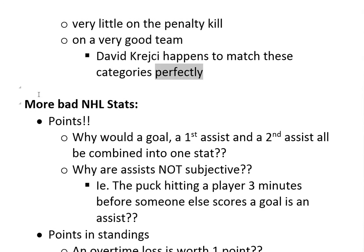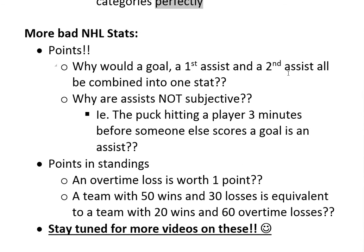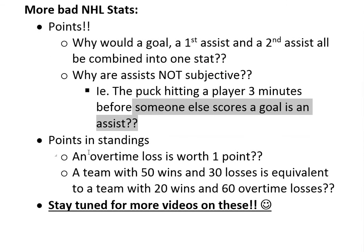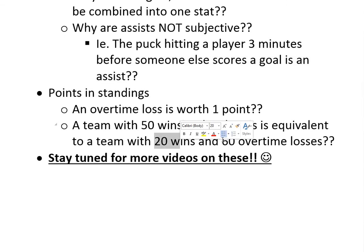I'm going to go over more of the NHL's bad stats in later videos. The first is points: why should a goal, a first assist, and a second assist be combined into one stat? Also, why are assists not subjective — meaning the puck hitting a player three minutes before someone else on your team scores a goal counting as an assist just doesn't make sense. And also points in standings: an overtime loss is worth one point, which doesn't make sense because a team with 50 wins and 30 regulation losses has the same 100 points as a team with 20 wins and 60 overtime losses — which is just ridiculous.